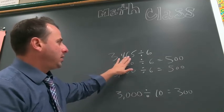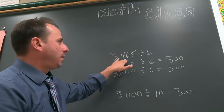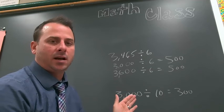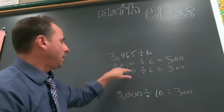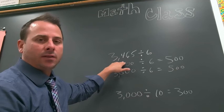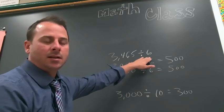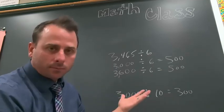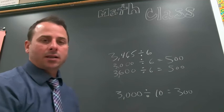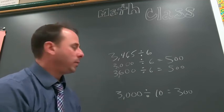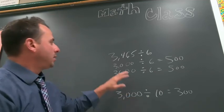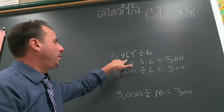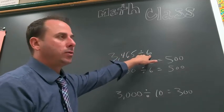If you were to just take this 3,465 divided by 6 and use a pure rounding method to try to get a solution, if you just rounded this to the nearest thousand, got 3,000, and you rounded that to the nearest ten and got 10, you would get 3,000 divided by 10 is 300, right? How accurate is that? It's a little bit off, it's not as precise.